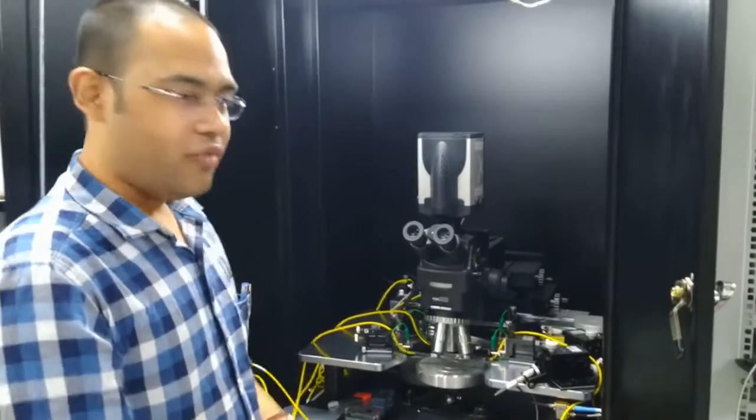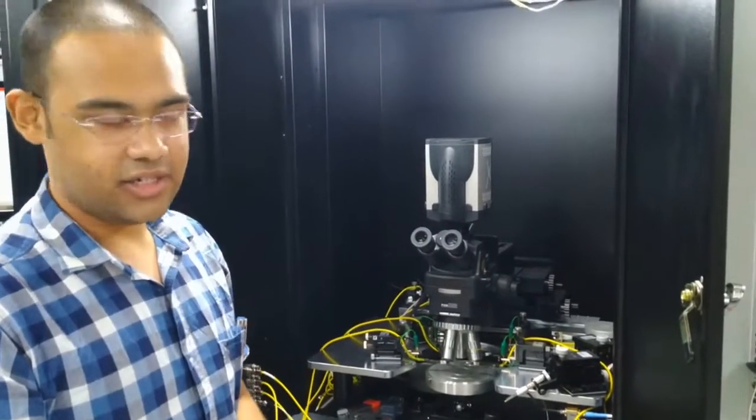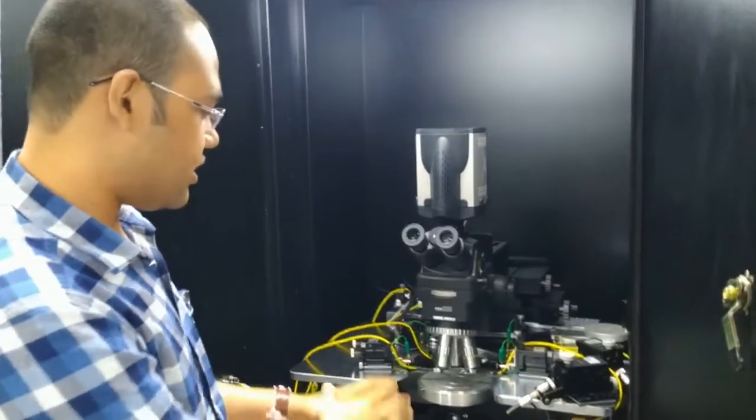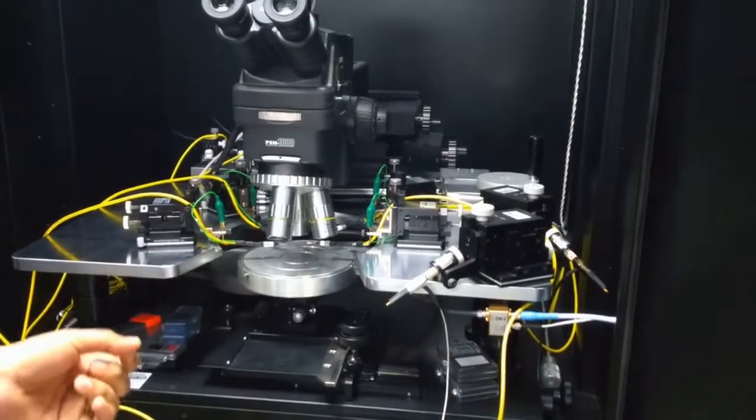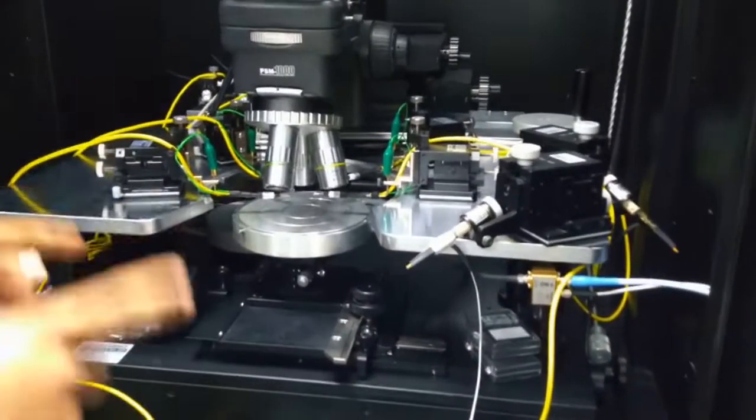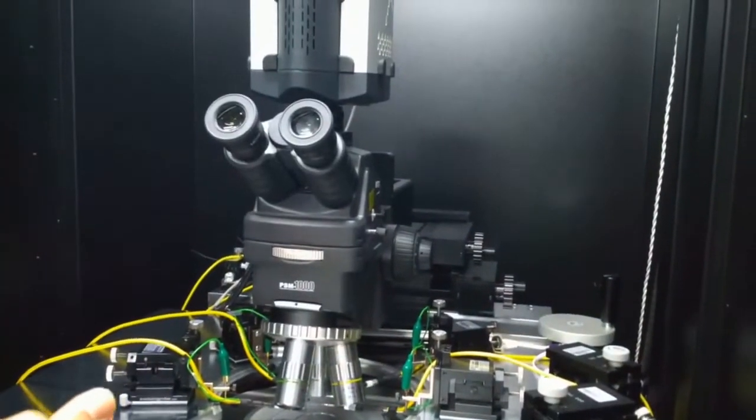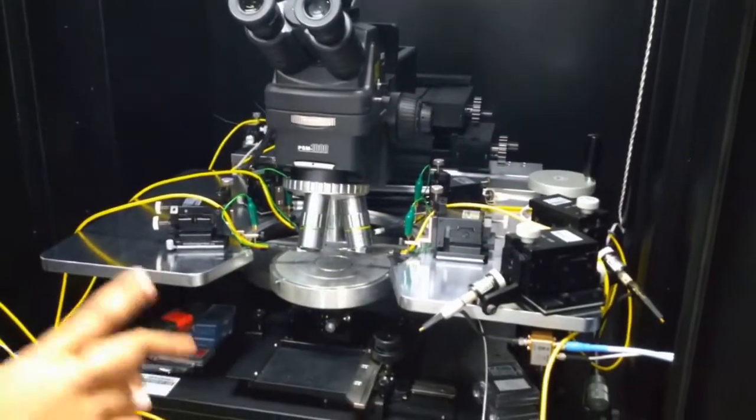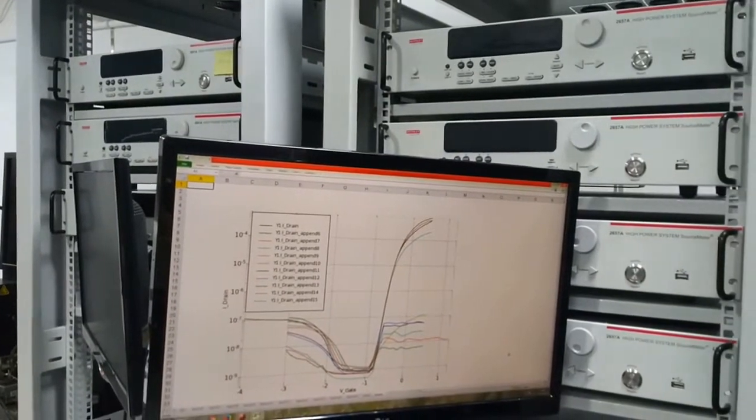This is the manual probe station which provides the platform to carry out on-wafer device characterization. We carry out device characterization using specialized probes to measure devices on wafers as large as 6-inch, which are focused using this high magnification microscope that can go up to 400x magnification. Once the devices are probed, we apply electrical stress using a high precision set of SMUs which can carry out tests over a large range of the IV space.